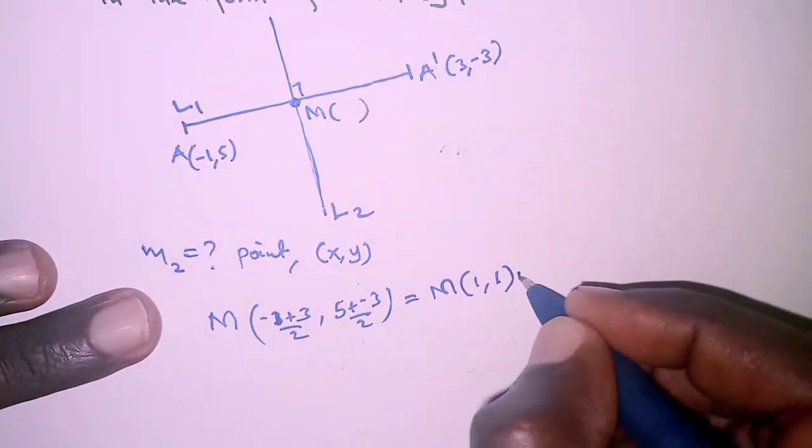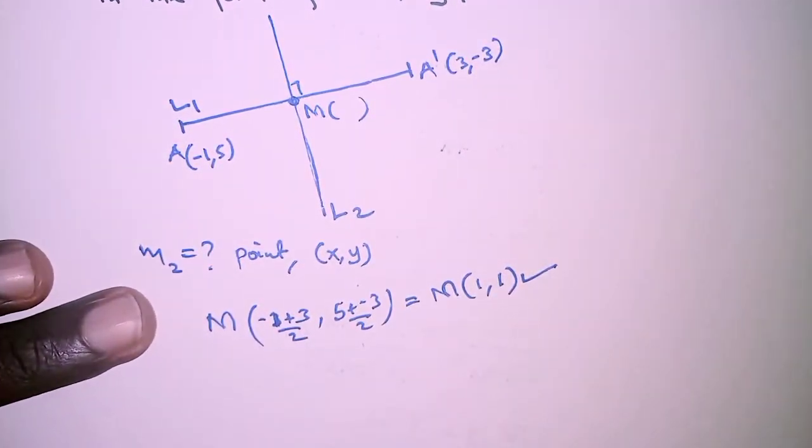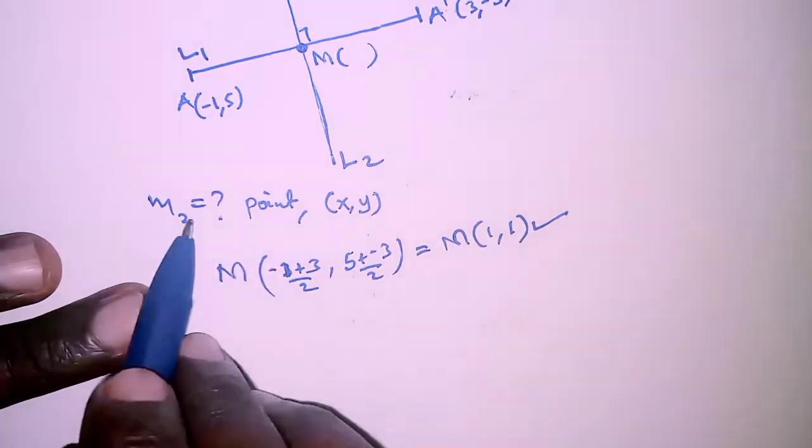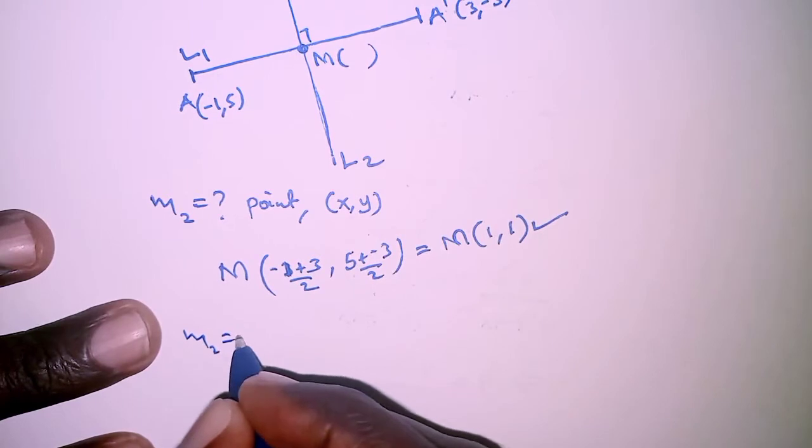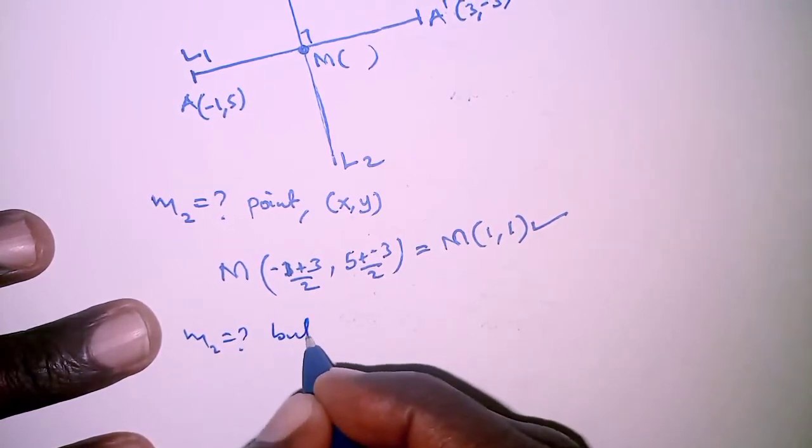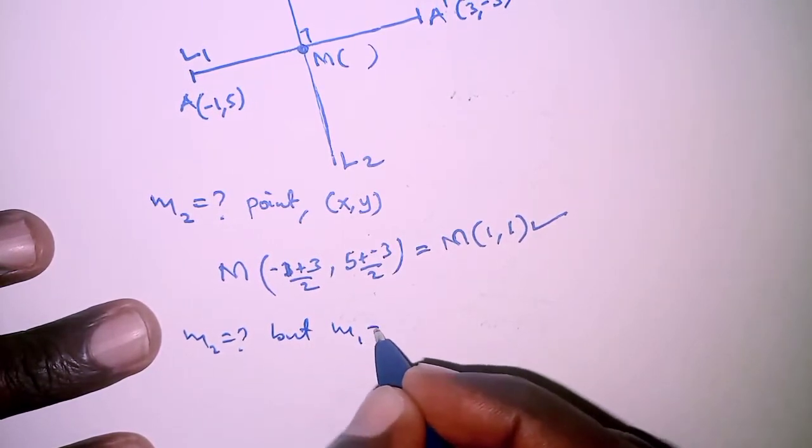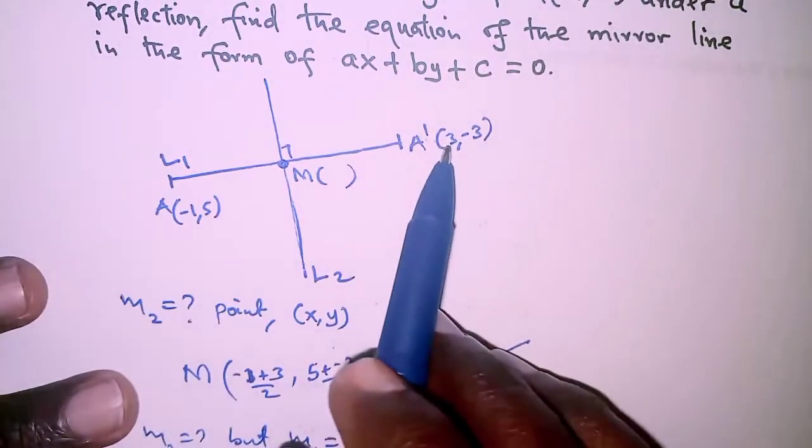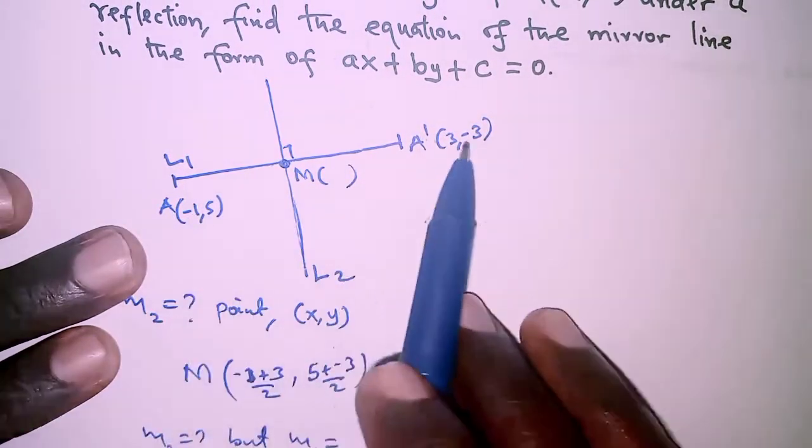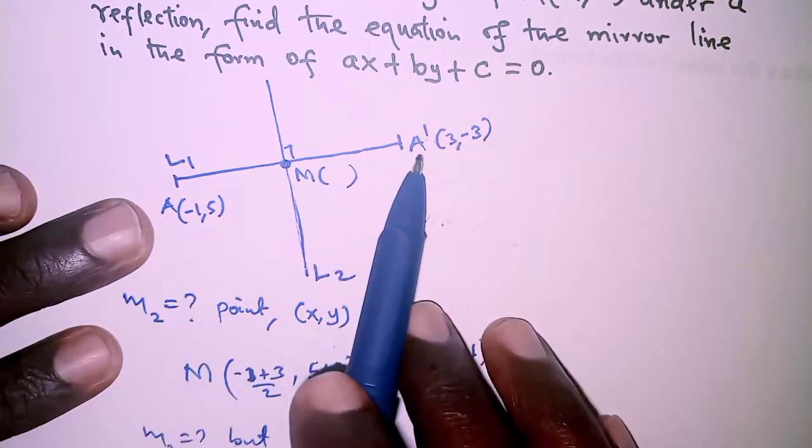So with this point we can also determine m2, but we know that m1 which is the gradient of line 1 is obtained by getting the change in y over the change in x for these two points A and A prime.